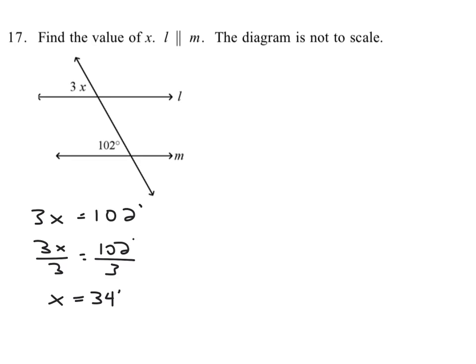...34 degrees is what the value of x is. And man, wasn't that quick and easy? Okay, all you got to do is know that the lines are parallel, corresponding angles are congruent, set those two amounts equal to each other, and solve.